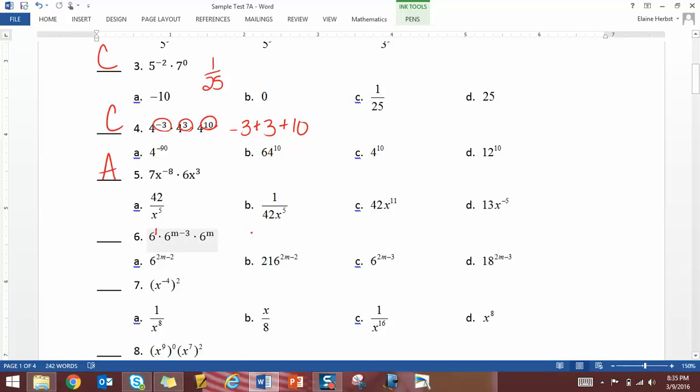So what are the exponents? The exponents are 1, M minus 3, and M. And when you add those together or combine your like terms, you get 2M minus 2. You are not multiplying the 6's together, so the answer here is A.